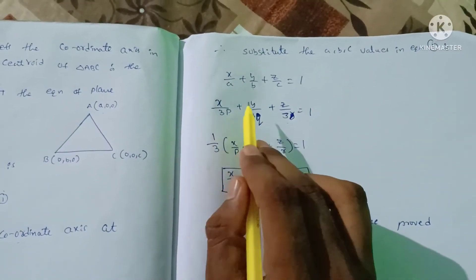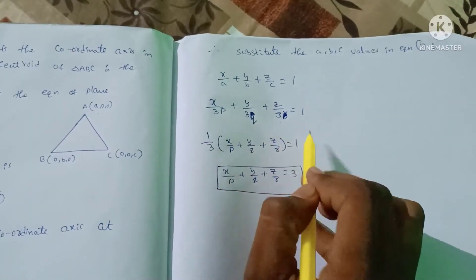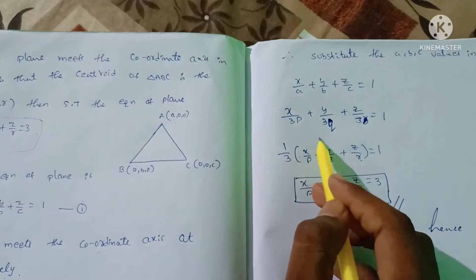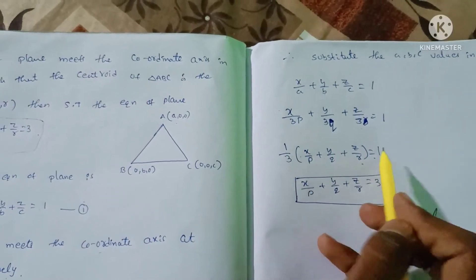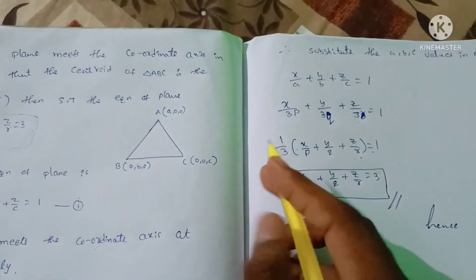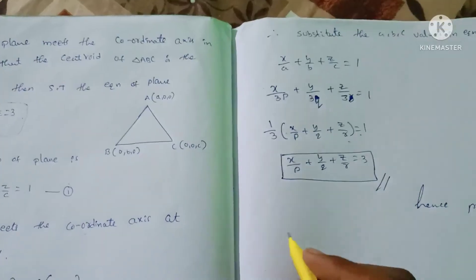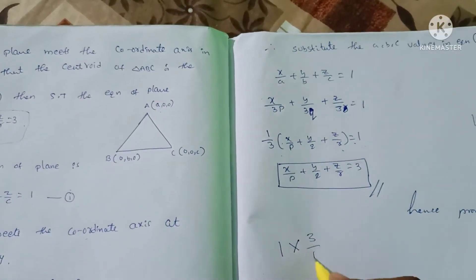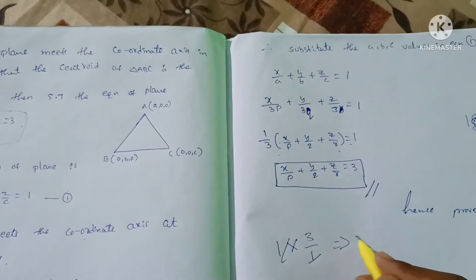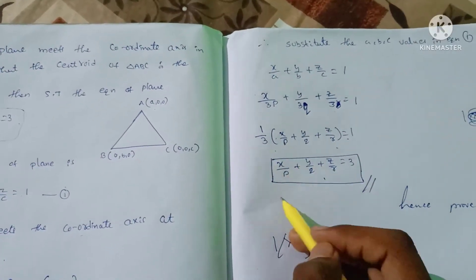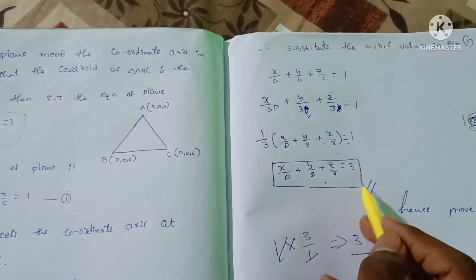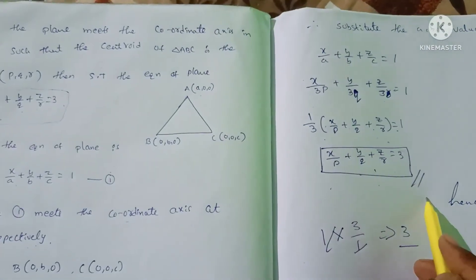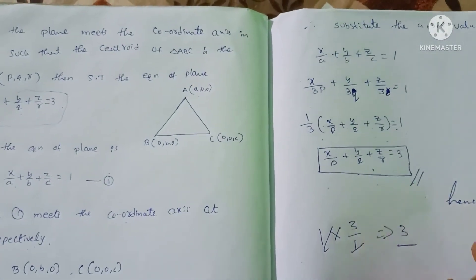Substituting, we get x/3p + y/3q + z/3r = 1. Taking 1/3 as common, we get (1/3)(x/p + y/q + z/r) = 1. Multiplying both sides by 3, we obtain x/p + y/q + z/r = 3.